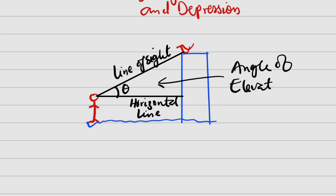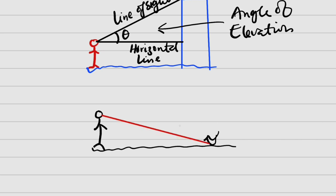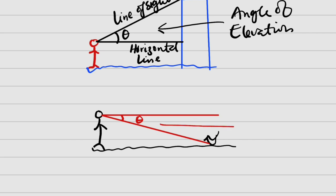But if the horizontal line is above the line of sight, then the angle formed is an angle of depression. Let me give you an instance: suppose we have the same person here, this is a horizontal ground, and it happens that a bird is situated on the ground and the person is looking directly at the bird. You can see that this is a horizontal line. So the angle formed — theta — between the horizontal line and the line of sight is an angle of depression, because the horizontal line is above the line of sight. So this right here is an angle of depression.